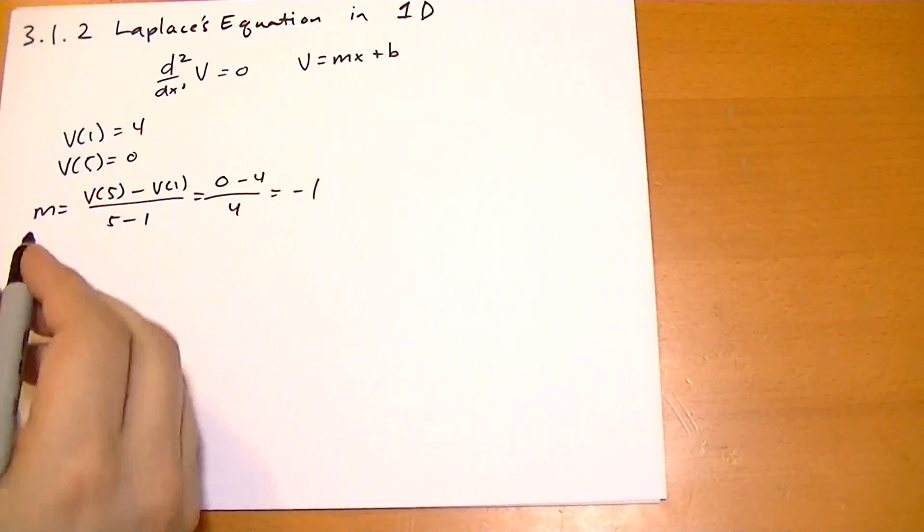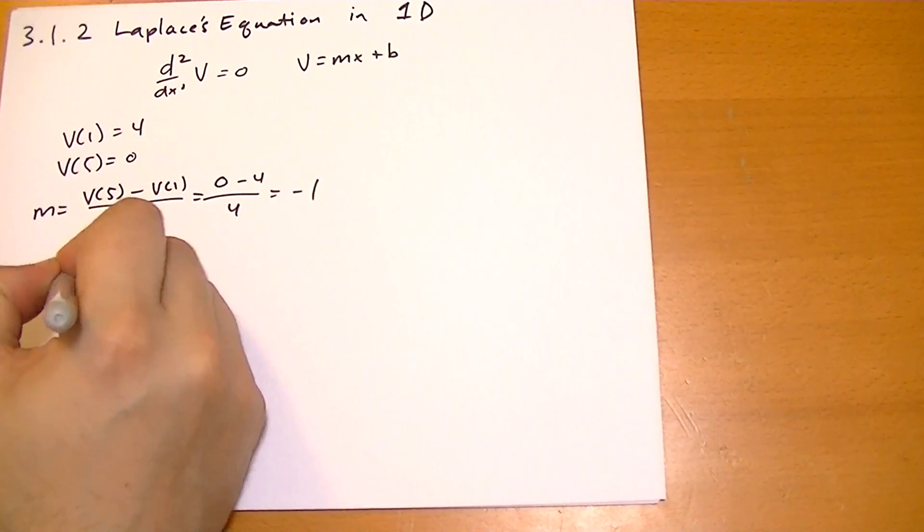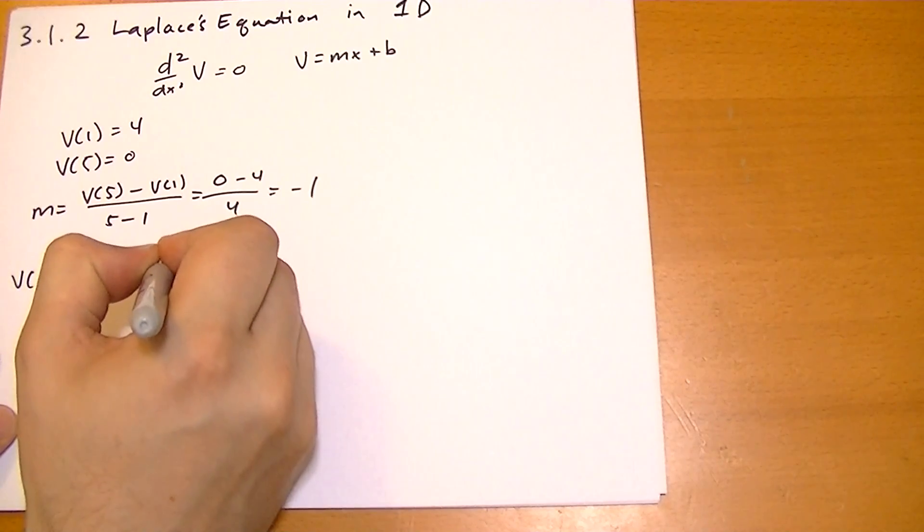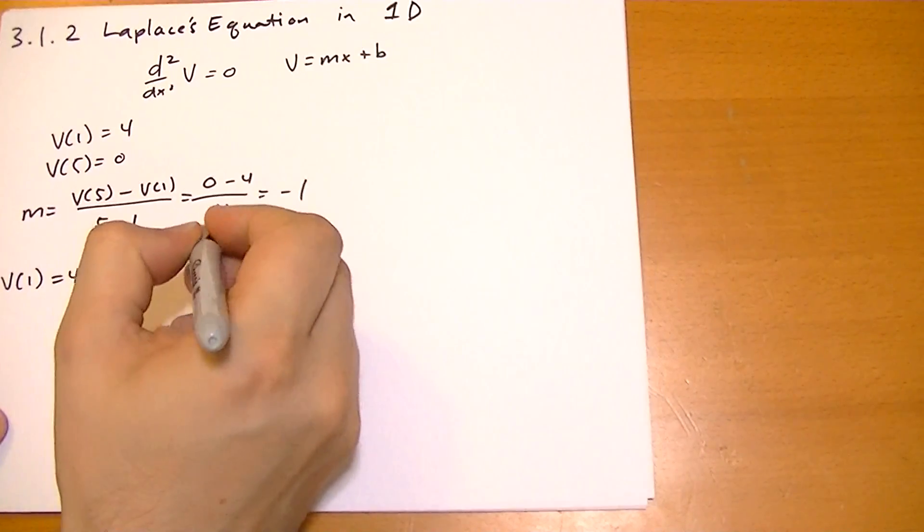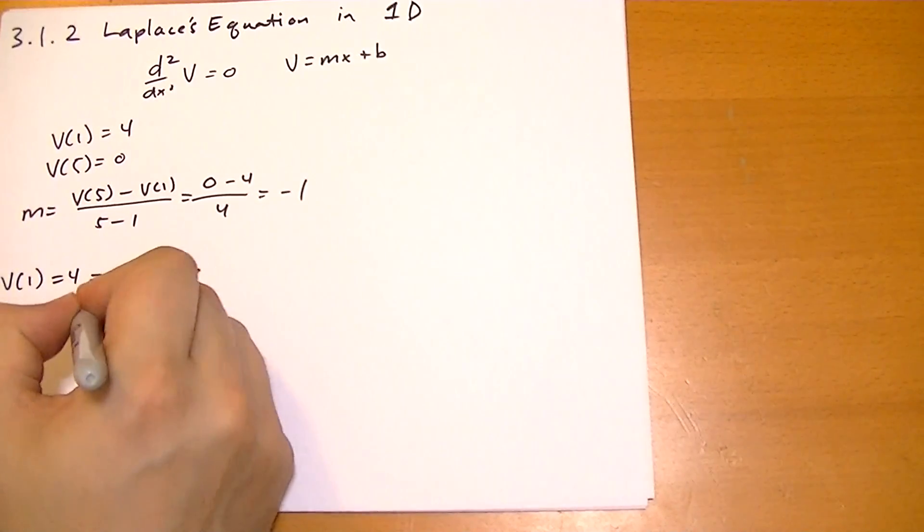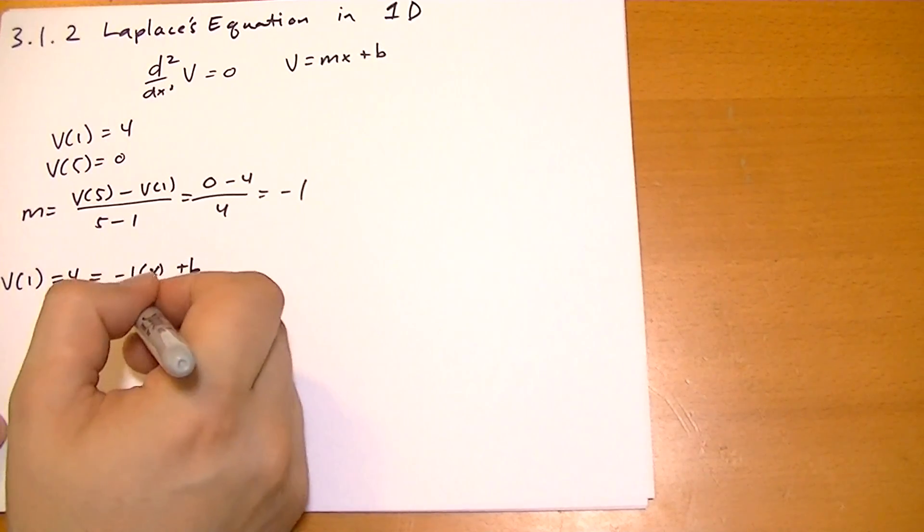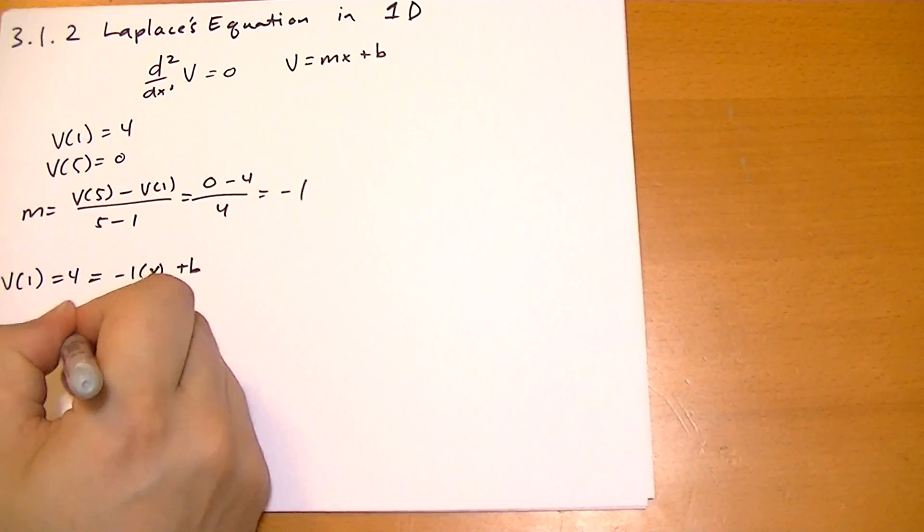And then you plug in one value. So you say v of 1 is equal to 4. Well, that's going to be equal to minus 1 times x plus b. So it's equal to minus 1 times 1 plus b. So we basically, 4 minus 1 is 3 equals b.